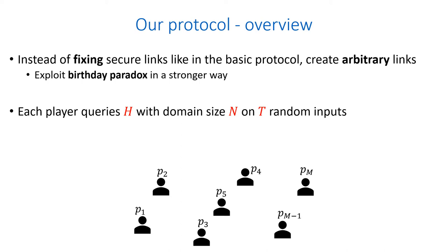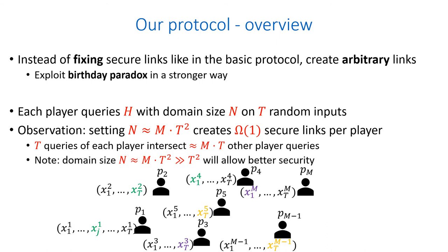Each player makes t queries to the random oracle. Setting the domain of the random oracle to m times t squared creates a constant number of secure links per player with high probability. This happens because the t queries of the player intersect the m times t queries of the rest of the players with high probability. Also note that setting the domain size to m times t squared allows better security, since it makes inverting an image of the random oracle harder.